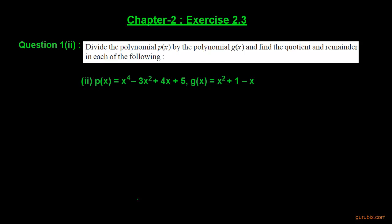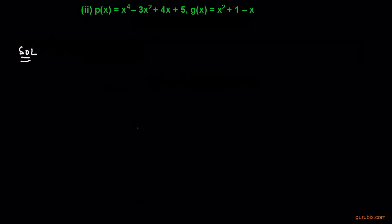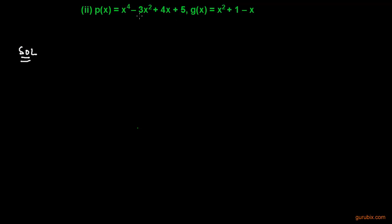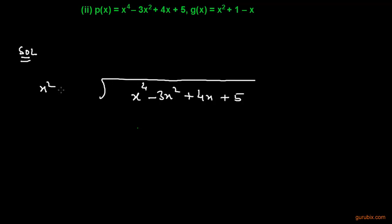Welcome friends, here is the second part of question number 1 of exercise 2.3 of chapter 2. We have to divide the polynomial p(x) by the polynomial g(x) and find the quotient and the remainder. Since p(x) is the dividend, we write p(x) as x⁴ - 3x² + 4x + 5, and the divisor g(x) is x² - x + 1.